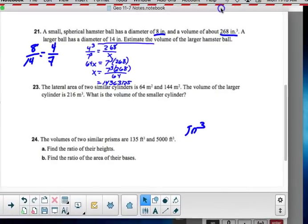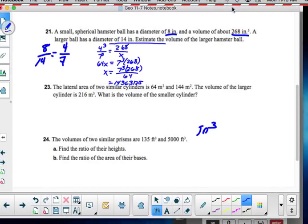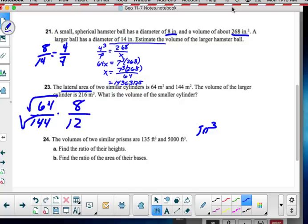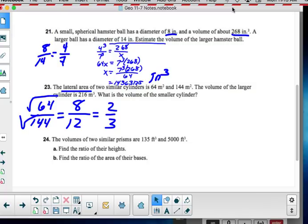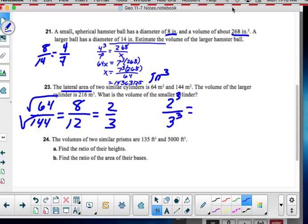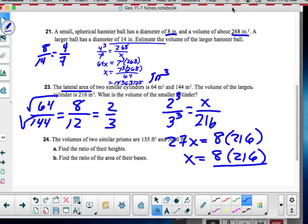So now, we got that done. The lateral area of two similar cylinders, the lateral area, that's squared. Two similar cylinders are 64 and 144. Remember, those are perfect squares. I'm going to find their square root. That's 8 to 12. Now, that's 8 to 12. They reduce to 2 to 3. So, that is my linear relationship. They're saying, hey, what's the volume? Well, the volume relationship is to the third power. And then the volume of the larger cylinder, that should be opposite this 3, 216, looking for the smaller cylinder volume. So, this is 27, 3 cubed, x, is equal to 8 times 216, and x is equal to 8 times 216, divided by 27.